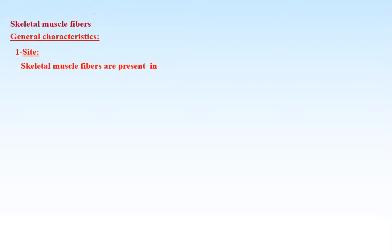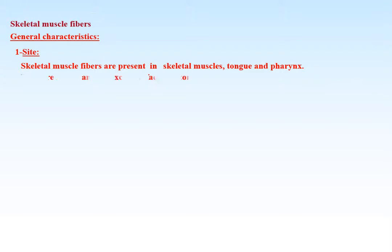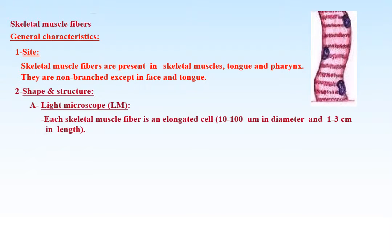Skeletal muscle fibers general characteristics: skeletal muscle fibers are present in skeletal muscles, tongue, and pharynx. They are non-branched except in the face and tongue. By light microscope, each skeletal muscle fiber is an elongated cell from 10 to 100 microns in diameter and from 1 to 3 centimeters in length.